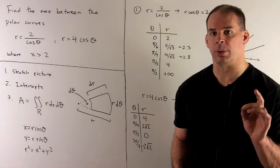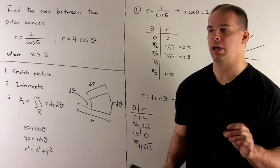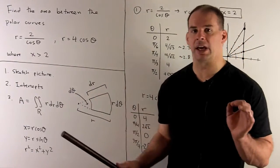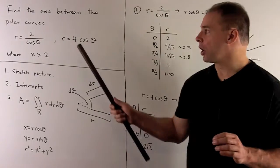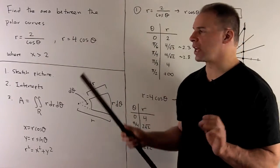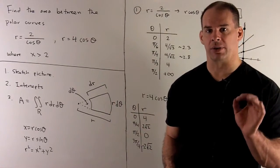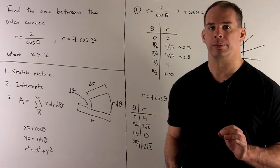Find the area between the polar curves r equals 2 over cosine theta and r equals 4 cosine theta, where x is greater than 2.